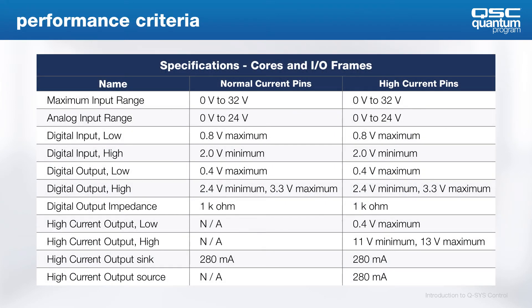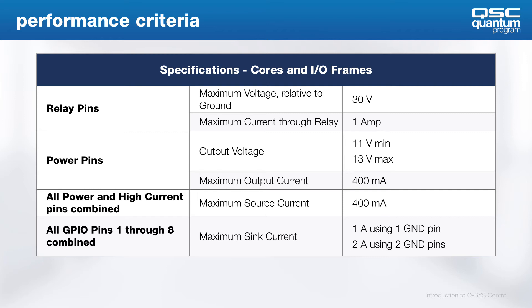In terms of performance criteria for GPIO connections, please reference the help file, which lists all the details of the various configurations — such as volt tolerances for low logic signals, which are below 0.8 volts, and a logic high input needing 2 volts or above. You'll also find minimum and maximum voltages, current capabilities, and output impedances. For relays, maximums of 30 volts and 1 amp are sufficient for most applications. Power pins are approximately 12 volts with a maximum output current of 400 milliamps, so with most LEDs you can power quite a few of them.